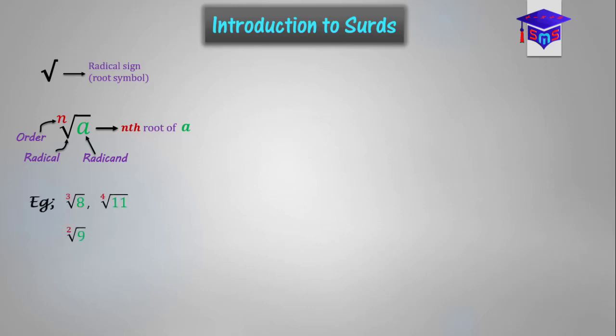For example, if you have the cube root of 8 or the third root of 8, the 3 over here is the order. Then the 8 is the radicand. The 3 is the order and the 8 is the radicand.